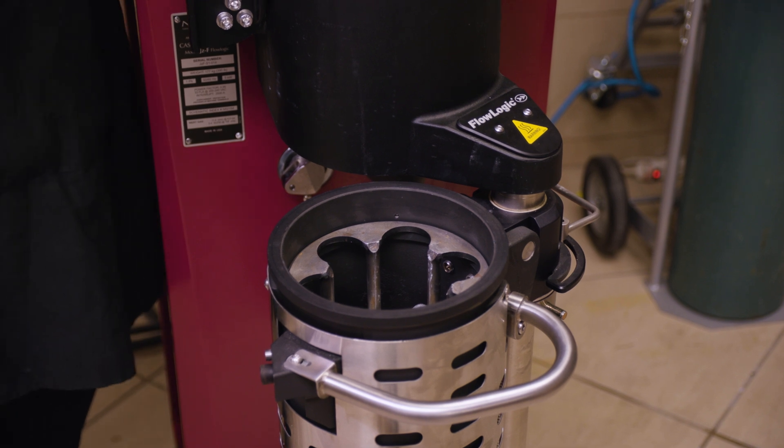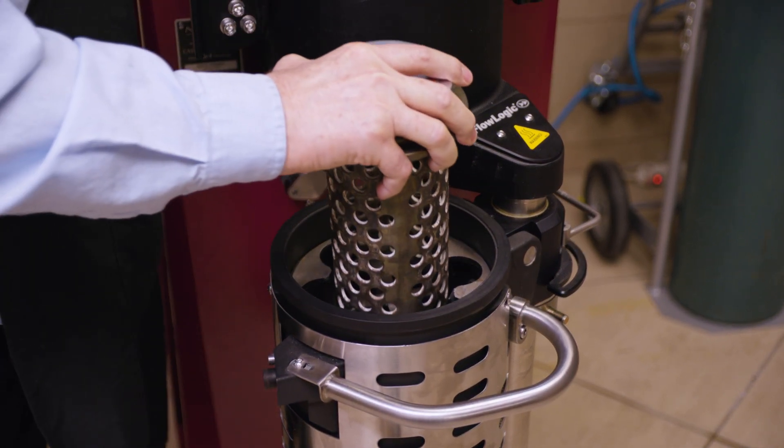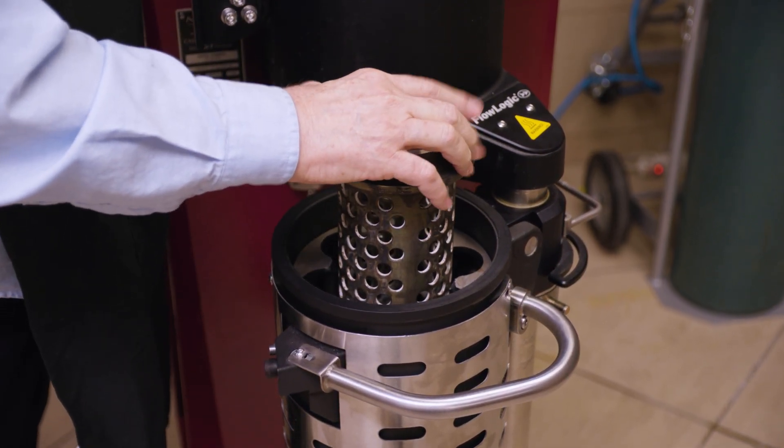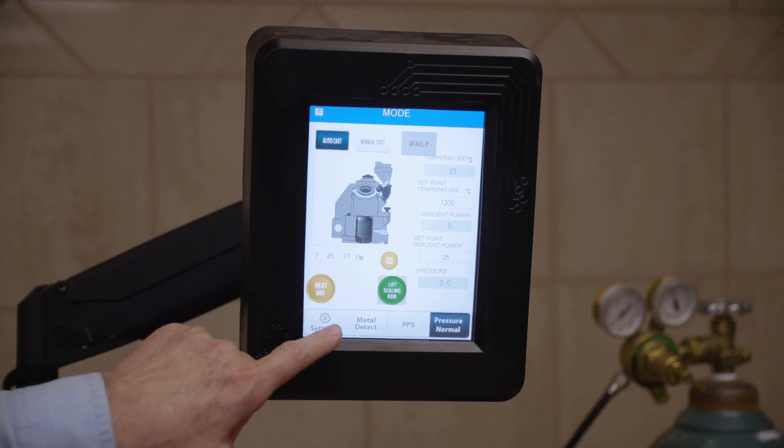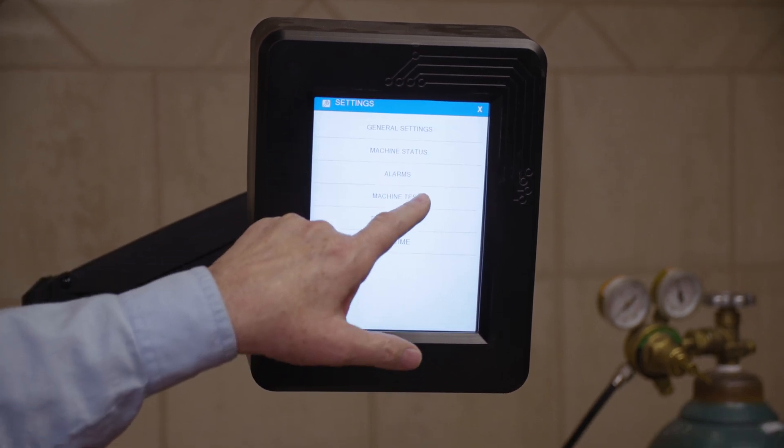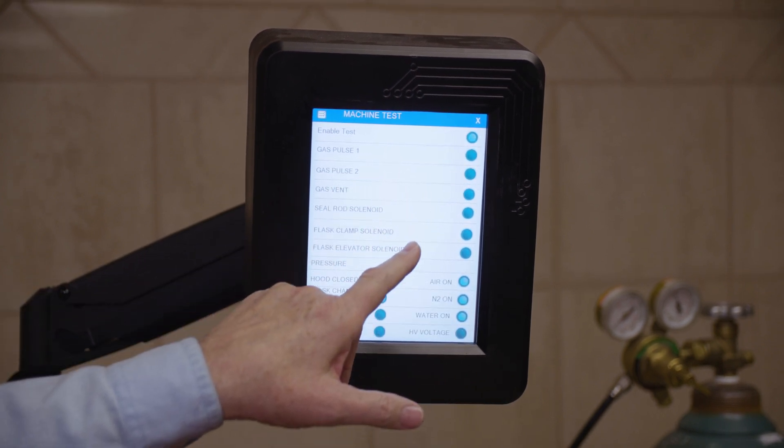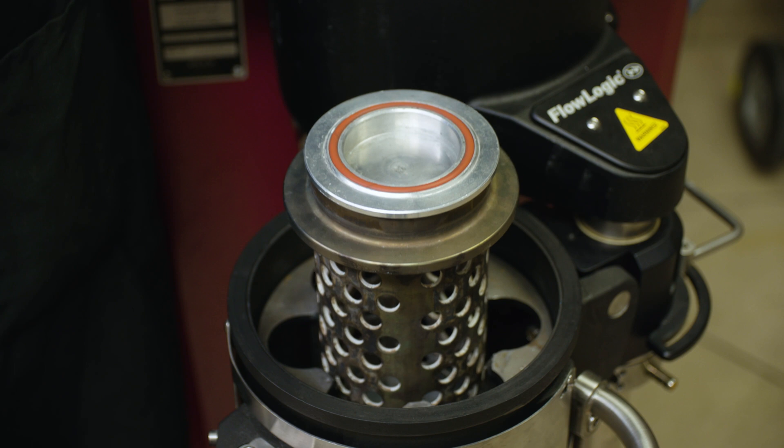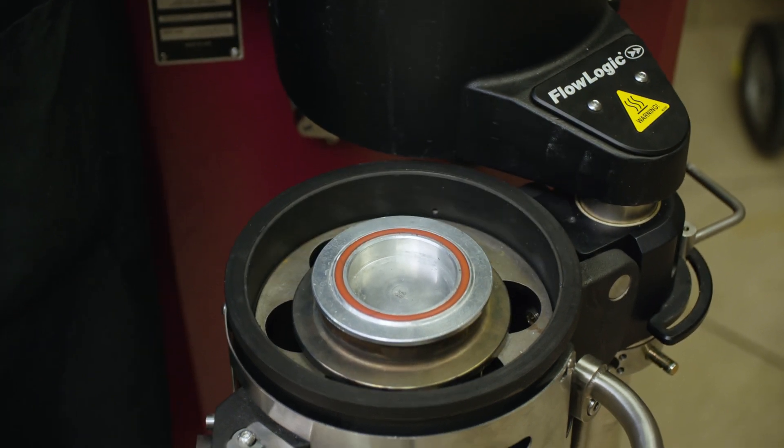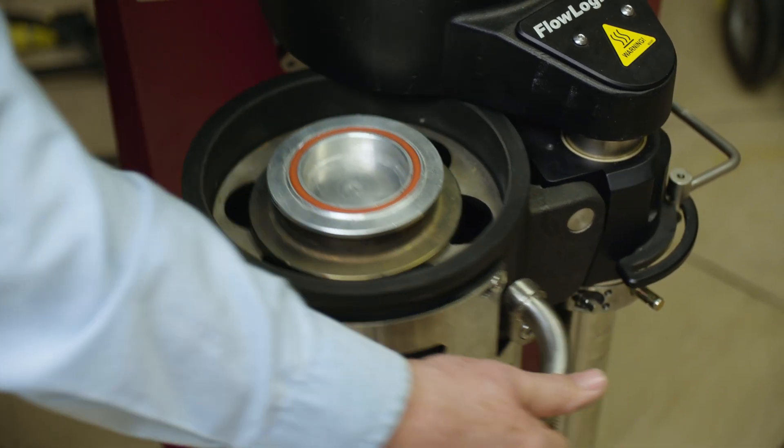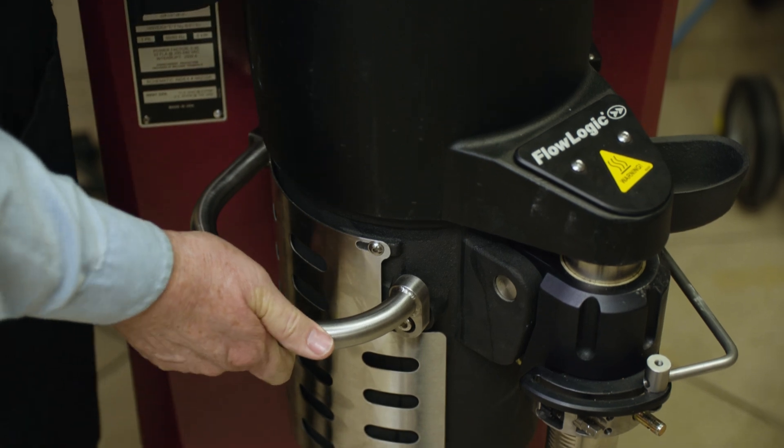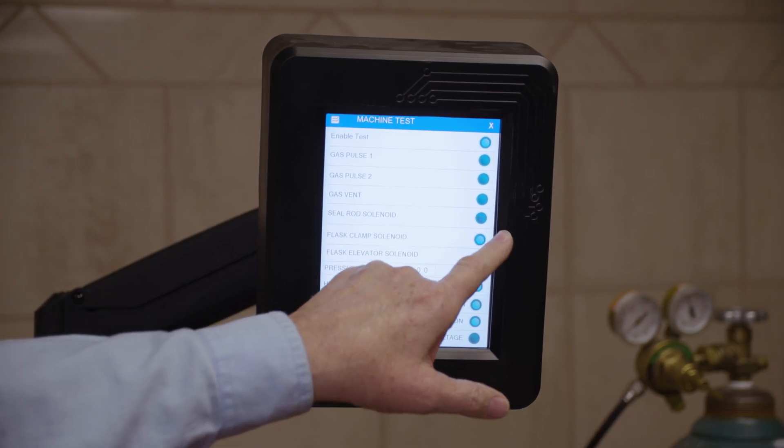Okay, so here's how we start the testing process. We first insert the flask in the chamber, then we go to settings, go to machine test, enable test, then we're going to lower the elevator and we're going to close the chamber, open the clamp up the solenoid.